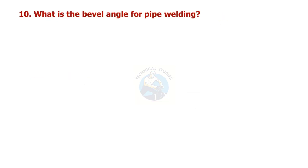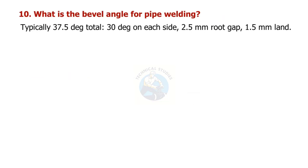What is the bevel angle of pipe welding? Typically 37.5 degrees total, 30 degrees on each side, with a 2.5 mm root gap and 1.5 mm land.